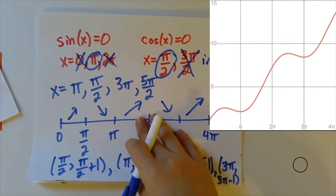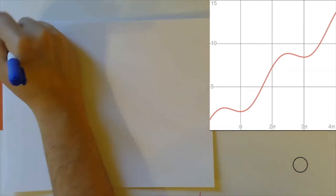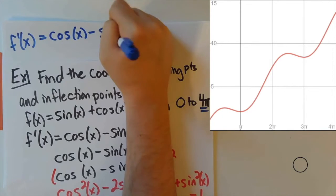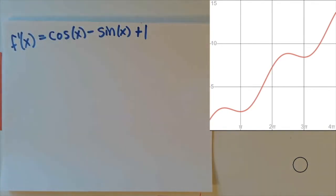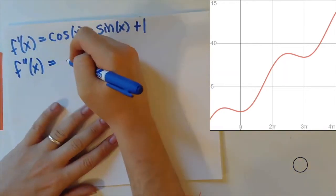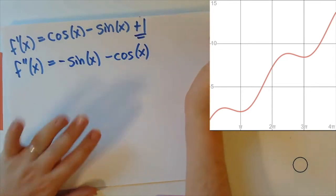We now have to look at inflection points, which correspond to where the second derivative is zero — places where concavity changes from concave up to concave down or vice versa. Going back to the first derivative, which is cosine of x minus sine of x plus one, the second derivative is minus sine of x minus cosine of x. The derivative of the plus one is just zero.